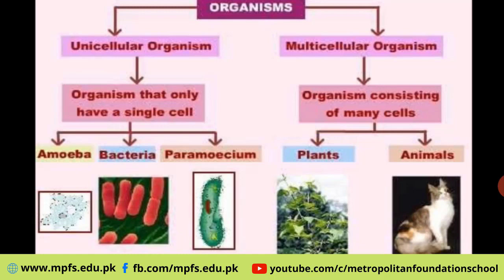Point number two: unicellular organisms cannot be seen without a microscope. We can see unicellular organisms only through the microscope available in our laboratory; we cannot see them with the naked eye. Most multicellular organisms, on the other hand, can be seen with the naked eye — we can easily see a cat, a dog, an elephant, and plants without a microscope.